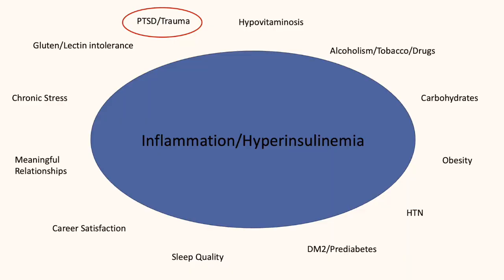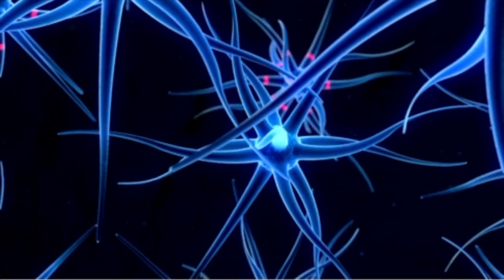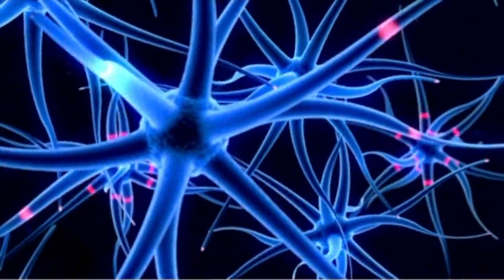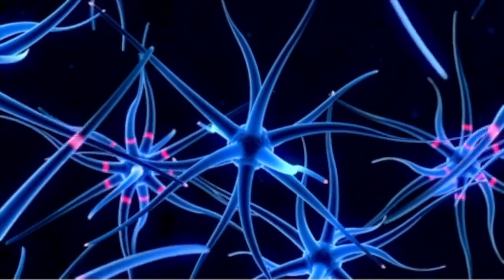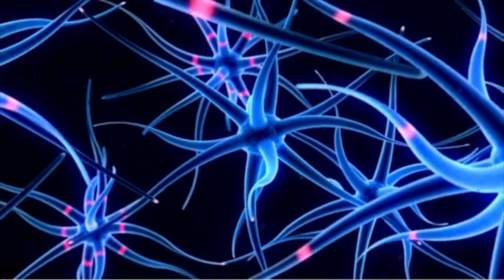Trauma is another source of body inflammation and elevation in insulin. When our body experiences trauma, our autonomic nervous system is activated. Our autonomic nervous system is the part of our nervous system that activates without us knowing it — it's our body's ability to protect itself. However, when we experience trauma and we're not able to discharge the energies related to trauma, that leads to elevations in glucose as well as other stress hormones, and our body thinks that it's chronically under stress.